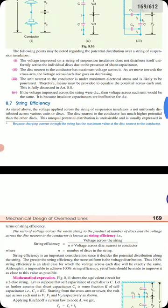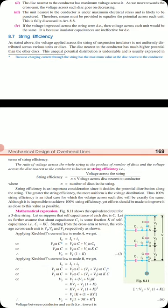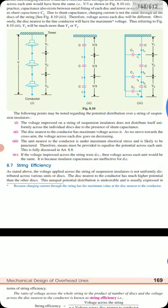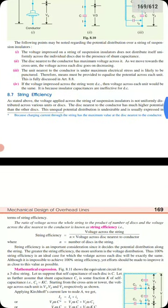String efficiency is defined as the ratio of the voltage across the whole string to the product of the number of disks and the voltage across the disk nearest to the conductor. The string efficiency formula is: V divided by (n × V3), where V is the total voltage across the string, n is the number of disks, and V3 is the voltage across the disk nearest to the conductor.